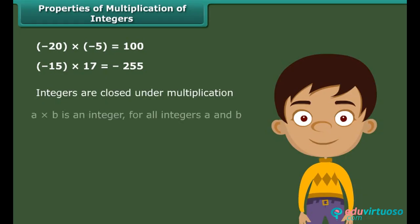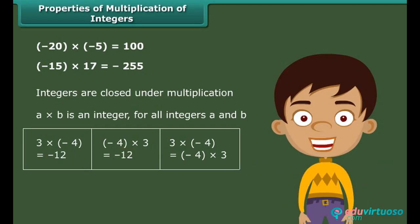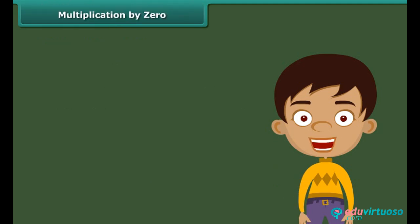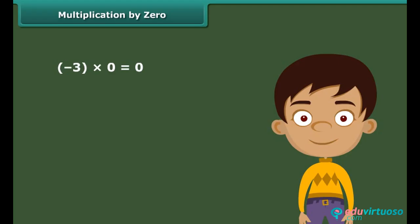In general, A times B is an integer for all integers A and B. Now observe this example: 3 times (−4) equals (−4) times 3. Therefore multiplication is commutative for integers. In general, for any two integers A and B, A times B equals B times A. Also, the product of a negative integer and zero is zero — for example, (−3) times 0 equals 0, and 0 times (−4) equals 0.